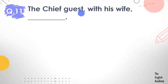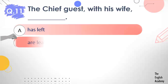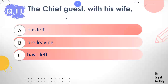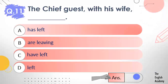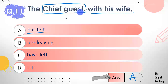Question number 11: The chief guest with his wife ___. Options: A) has left, B) are leaving, C) have left, D) left. The answer is option A — has left. Here we only consider 'the chief guest' as the main subject. 'With his wife' is an additional phrase and does not double the subject, so we use a singular verb — has left.